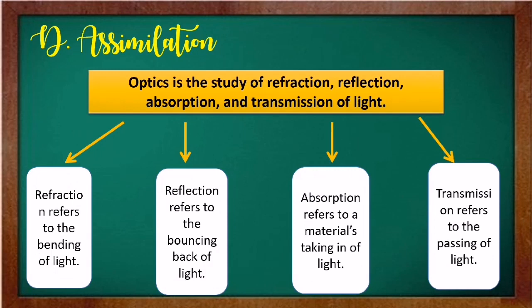For the assimilation part, let's review: Optics is the study of refraction, reflection, absorption, and transmission of light. Refraction refers to the bending of light. Reflection refers to the bouncing back of light. Absorption refers to a material's taking in of light. Transmission refers to the passing of light. Always remember: refraction — bending; reflection — bouncing back; absorption — taking in of light; transmission — passing of light.